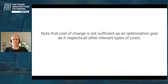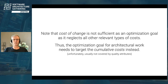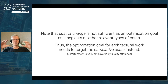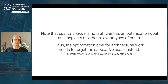That's why it's important to look at all types of costs your decisions inflict — not only development costs but also deployment, operations, maintenance, license, infrastructure, administration, and even lost revenue if you miss a window of opportunity. The optimization goal must target cumulative costs, not only cost of change — but this is usually not covered by quality attributes.